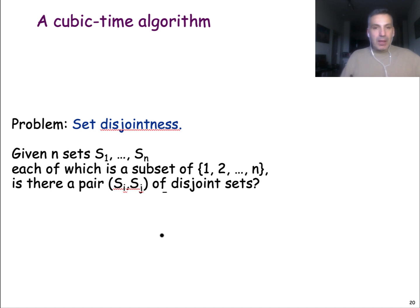Now let's look at the cubic time algorithm. As you can expect here, the running time will be upper bounded by a cubic function of n. So what's the problem here? We're given n sets, s1 through sn, each of these sets is a subset of these n numbers. So you can think of it that perhaps I'm giving you n objects and each object has an identifier from 1 through n.